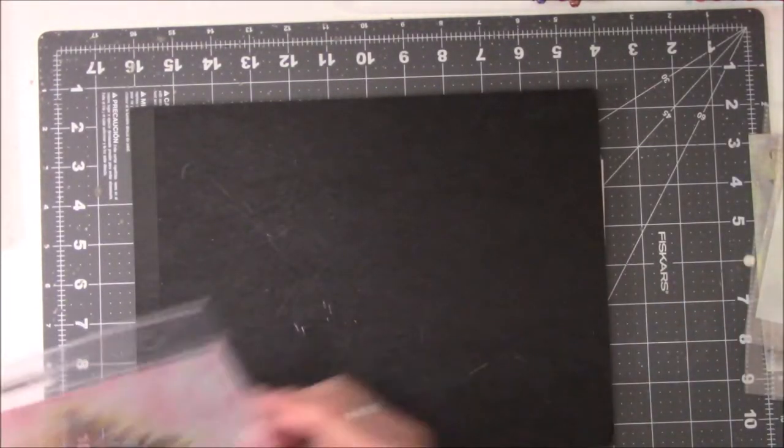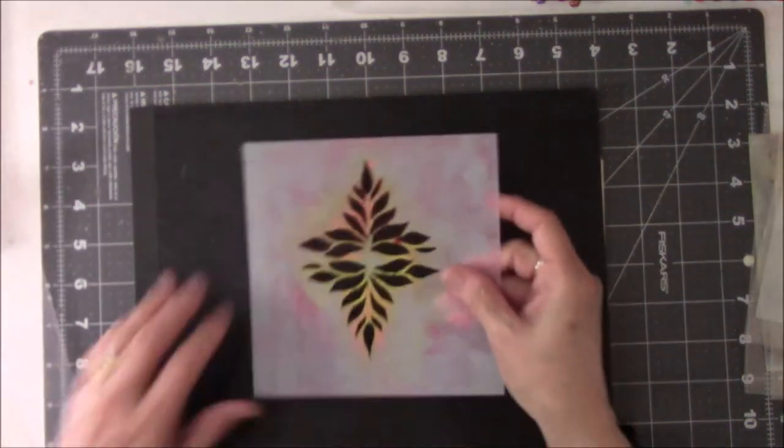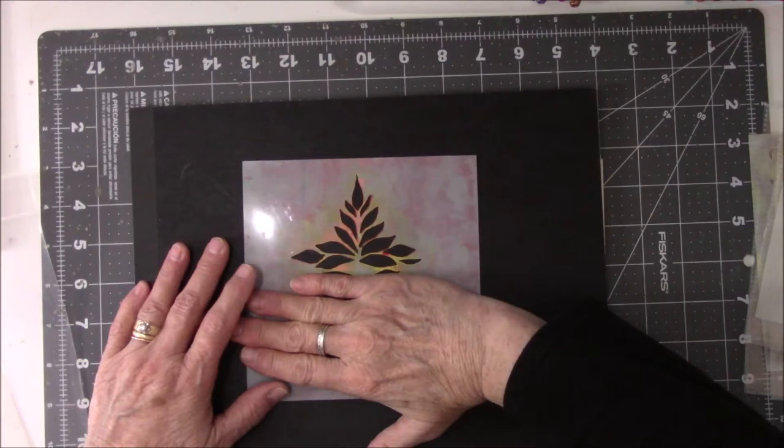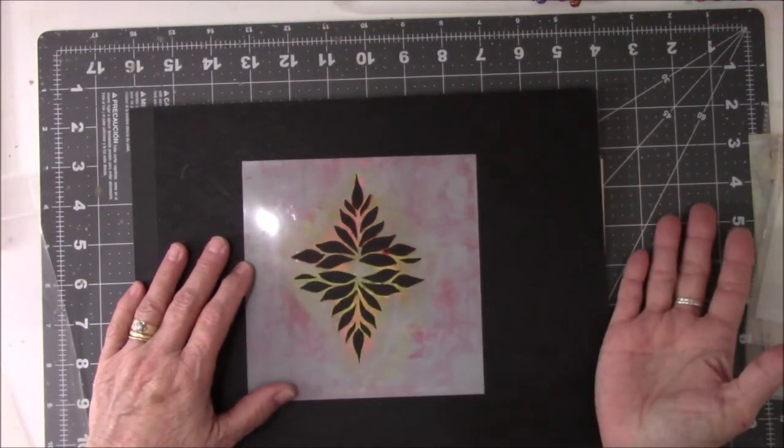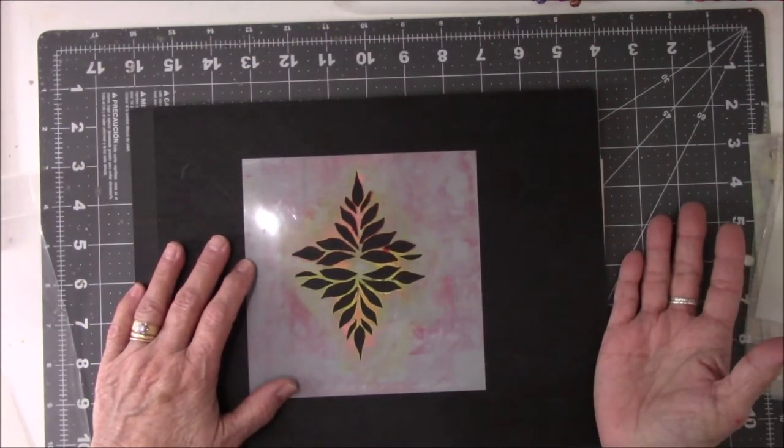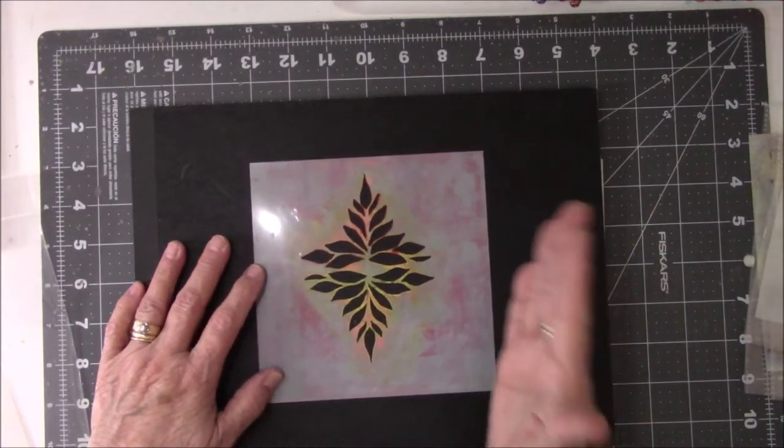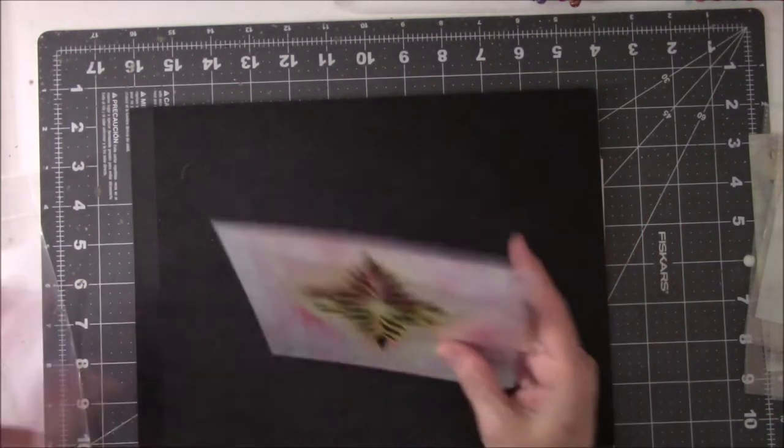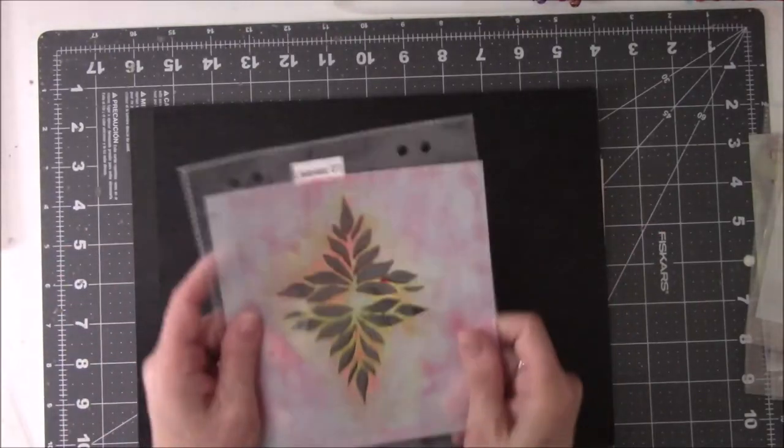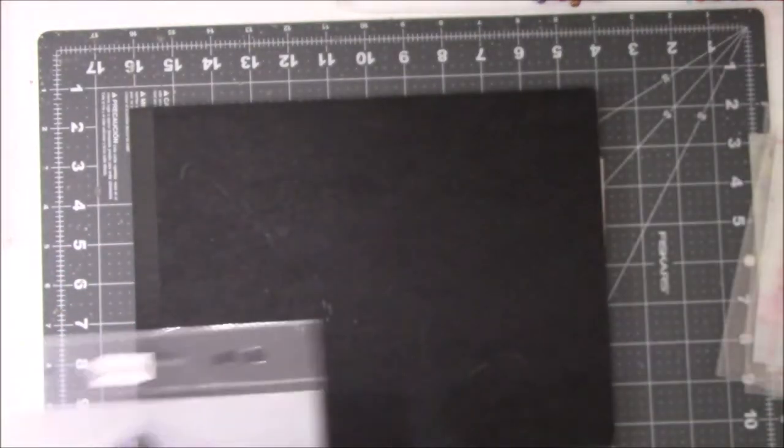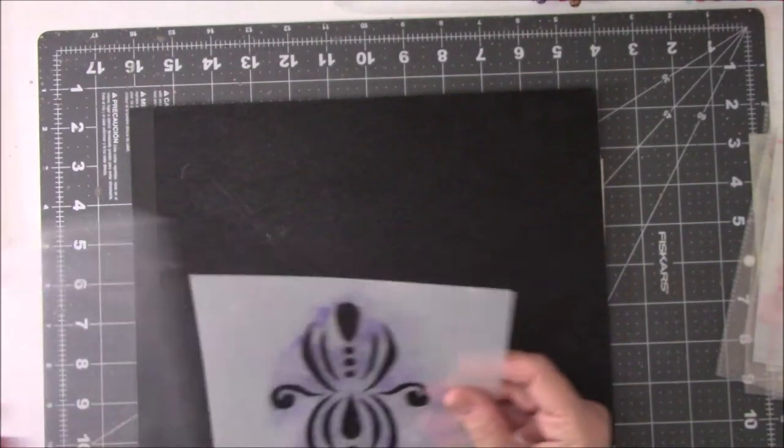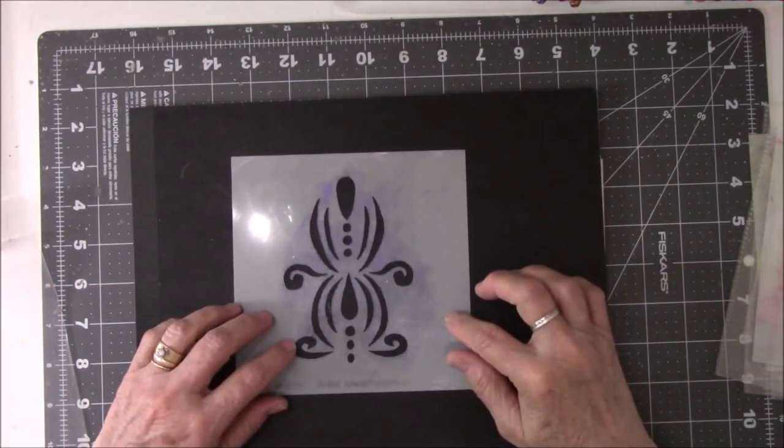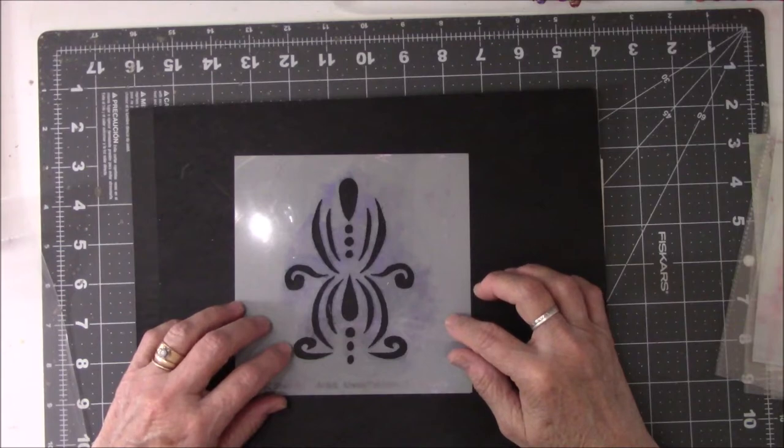And we have another one called Leaves 01. The original was only this big, but Carla said, well, what if we do this? I was like, oh, didn't think of that. This is why you work with another professional. Trust them. They do know what they're doing. And this one's called Serenity. Oh, that looks good on the black.